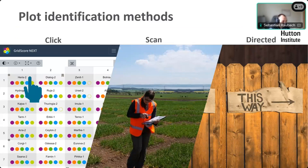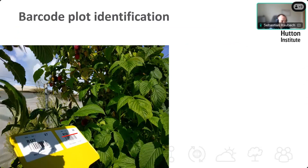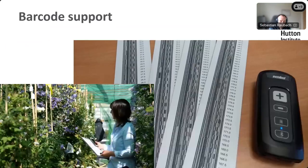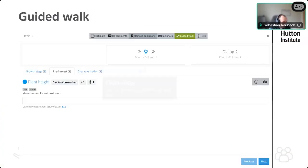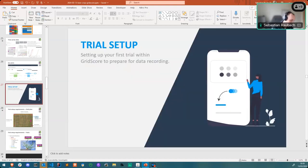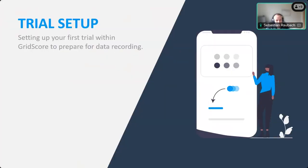I'm going to skip this for now and may come back to it if there are questions about different ways to collect data — you can click on a plot, but you can also use barcodes or a guided walk that takes you through the trial. I can come back to that if there's interest. Let me go to the trial setup, which I put in the wrong order actually.